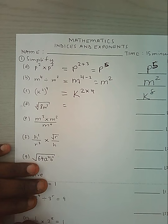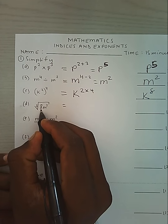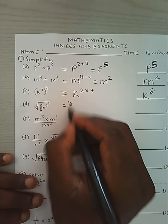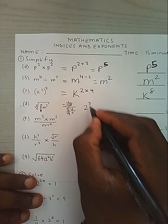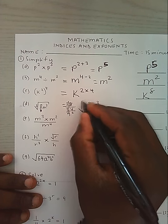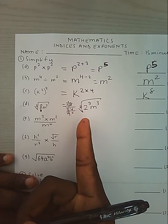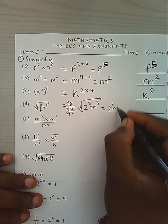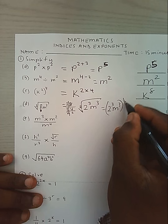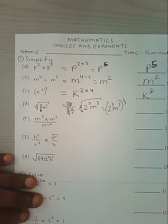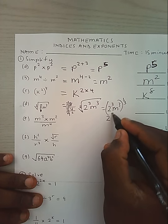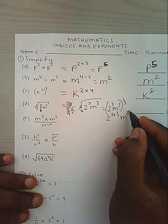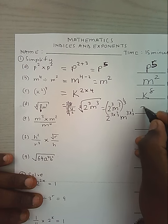Now, if we have a larger number, we can factorize it first. We shall take it as 3 power 3 times n power 3 under the cube root. To remove the cube root, we change it to power 1 over 3. Opening the brackets gives 3 power 3 times 1 over 3, n power 3 times 1 over 3, giving us 2n.